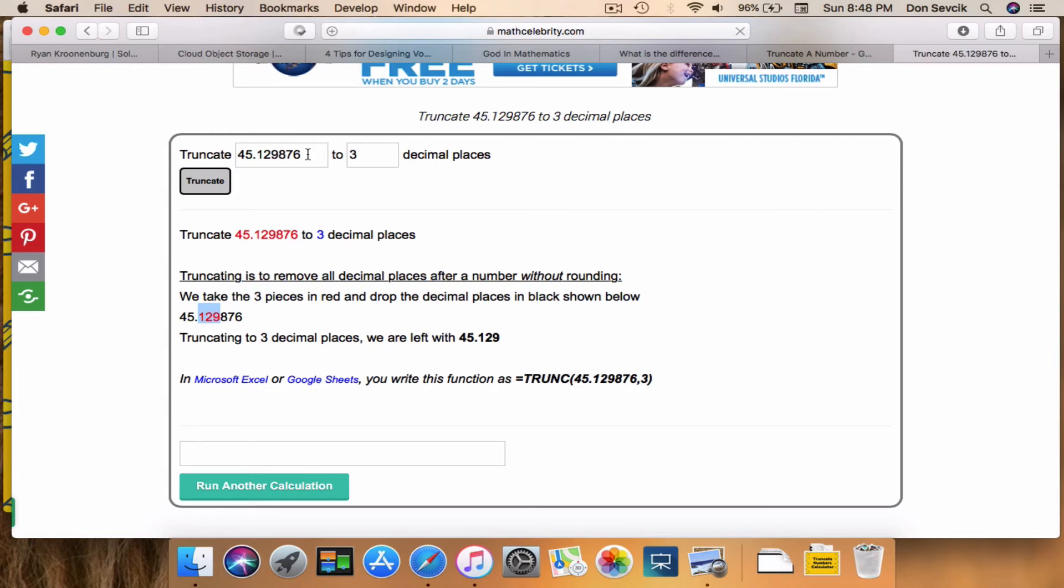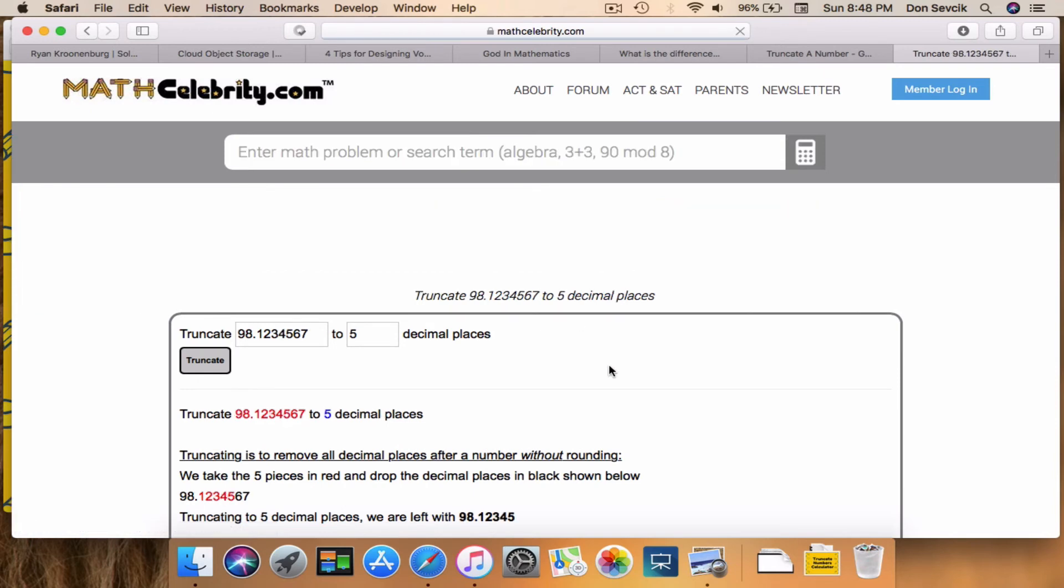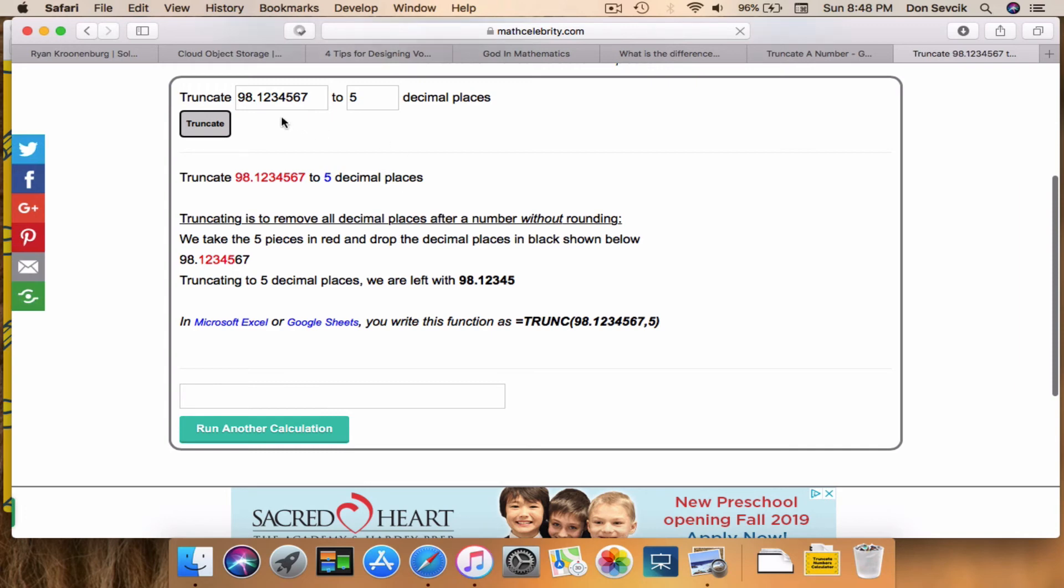So if you were to change this number, you can either change it here, or I always like to start at the search engine. Let's truncate 28.12345672 to 5 digits. Run this again, and boom.